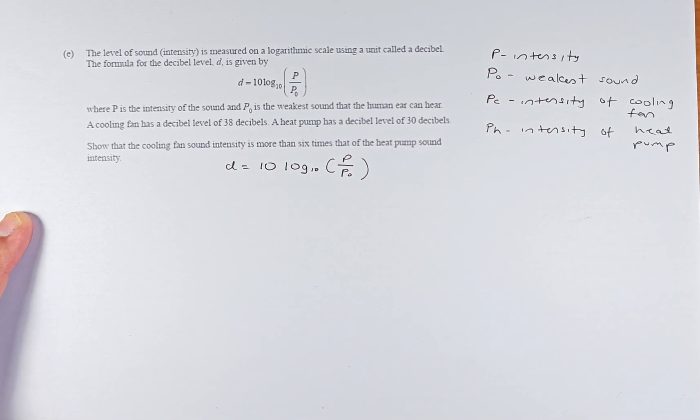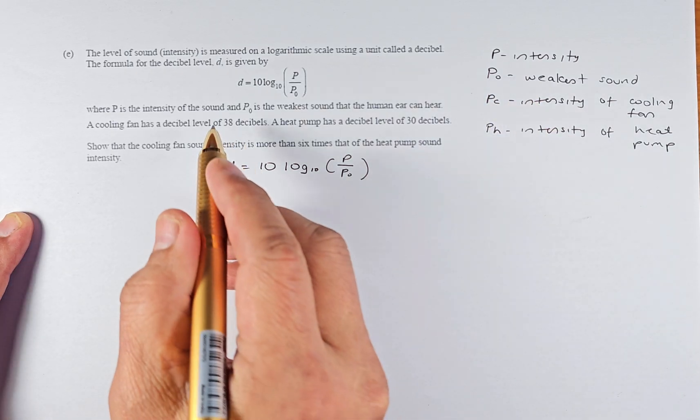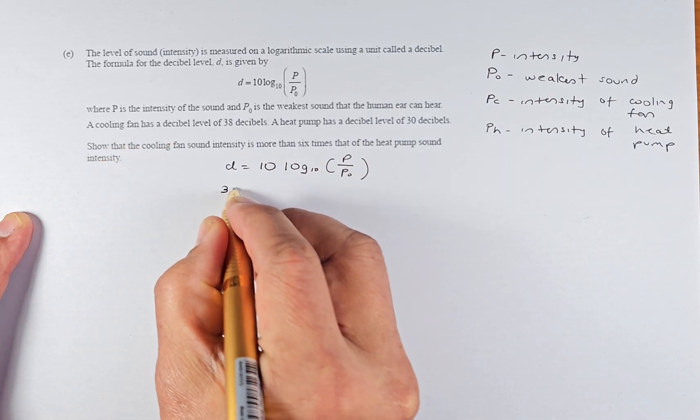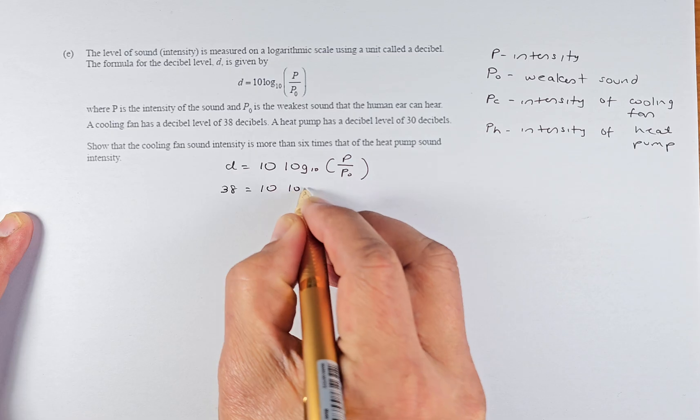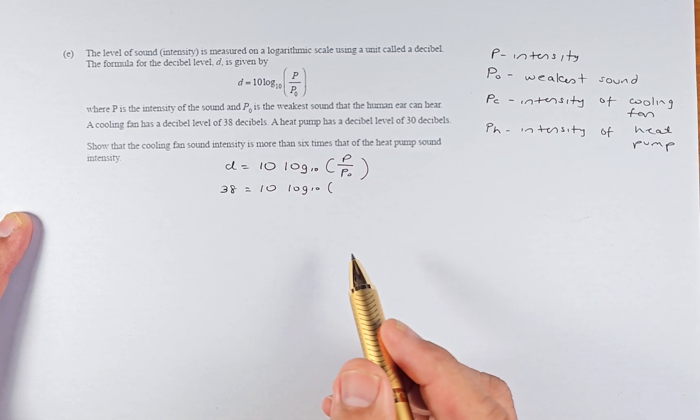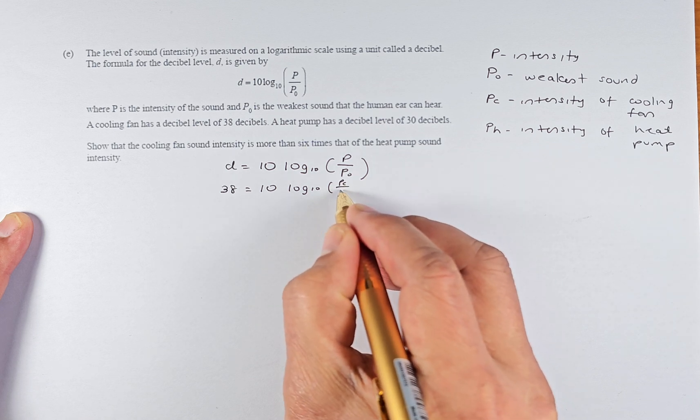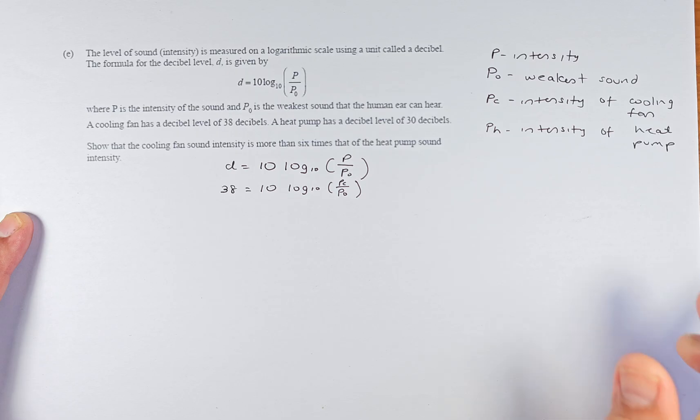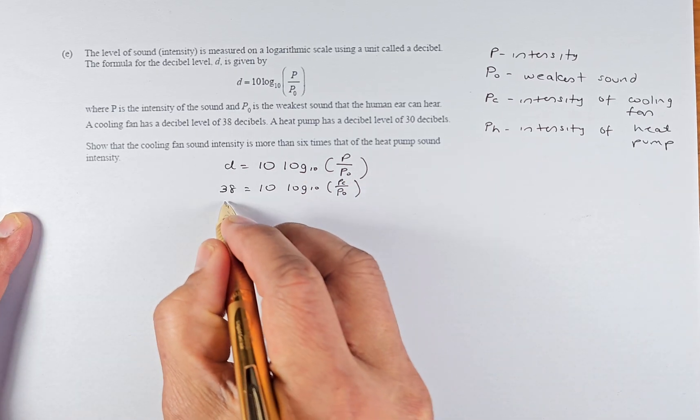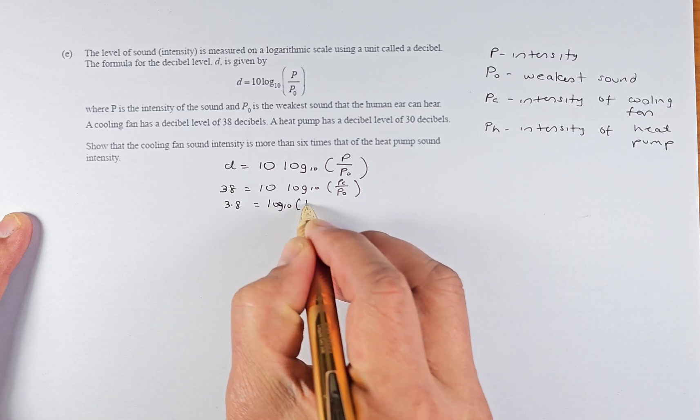We are going to substitute the decibel for the cooling fan. D is going to be 38, so 38 = 10 log₁₀(Pc/P₀). Now we're going to simplify this by dividing by 10, so it becomes 3.8 = log₁₀(Pc/P₀). Now we are going to convert this form, the log form, into the index form.